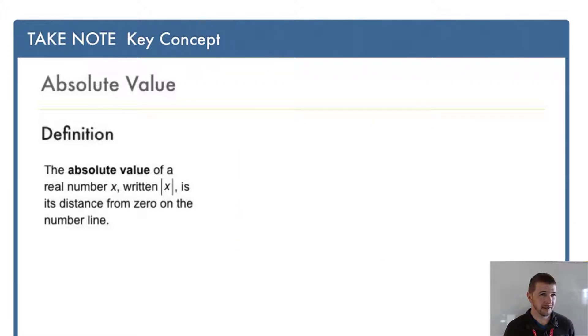...number x, written in these vertical bars (the absolute value symbols), is its distance from zero on the number line. In terms of numbers, we can see the absolute value of 4 equals 4, and the absolute value of -4 also equals 4.